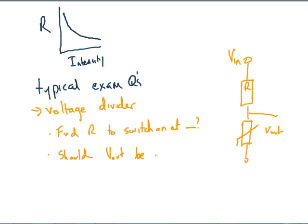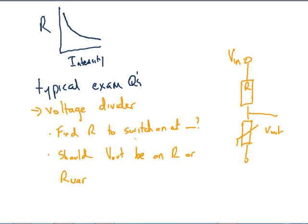The next one is: should Vout be on R variable, our LDR, our thermistor, whatever it is? Should it be placed on Vout on the variable resistor, or should it be placed on the resistor that we're sticking in of known value? And you'll be expected to justify your answer.